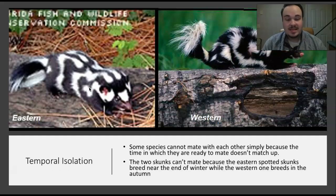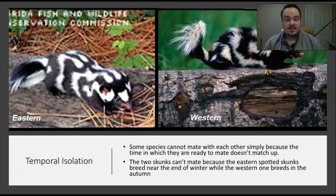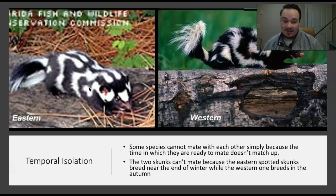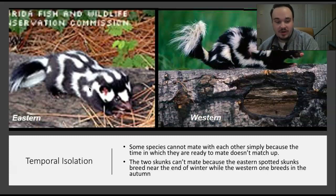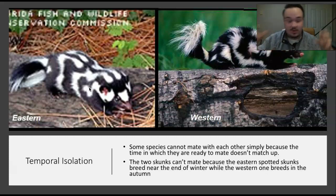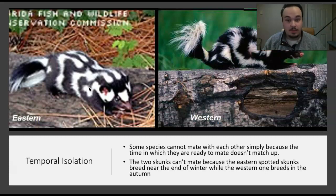The next prezygotic barrier is temporal isolation, or time isolation. Some species can't mate with each other simply because their mating seasons don't overlap. For example, the eastern and western spotted skunk look very similar, but the eastern spotted skunk breeds near the end of winter into early spring, while the western one breeds in late summer and autumn. These two are temporally isolated — they're never ready to breed at the same time, so they only breed within their own species, which perfectly fits our species definition.